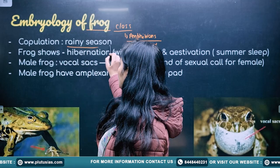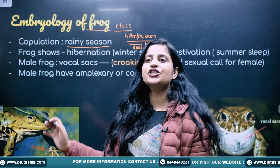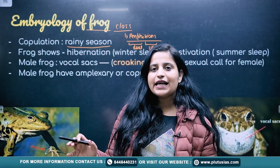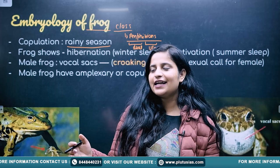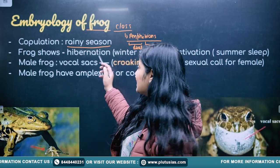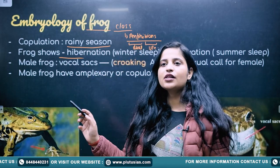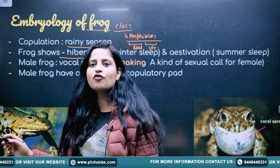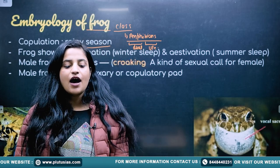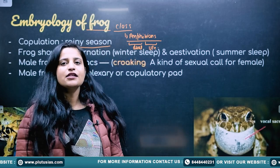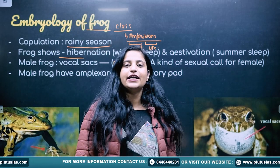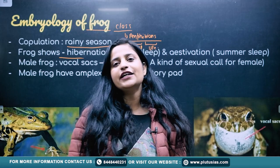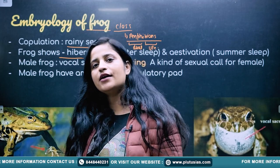Frogs do copulation in the rainy season — specifically they copulate when it is raining. Frogs show hibernation as well as estivation. Hibernation is winter sleep and estivation is summer sleep.